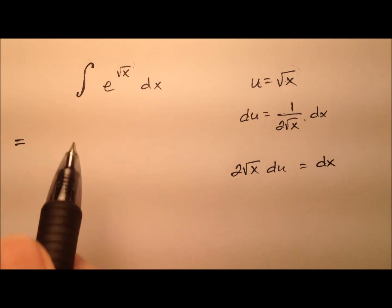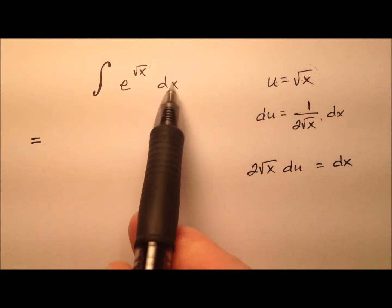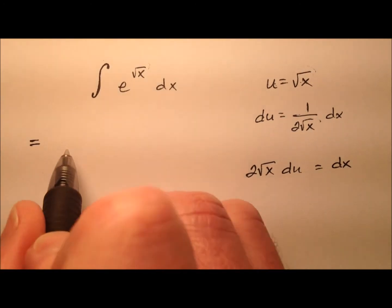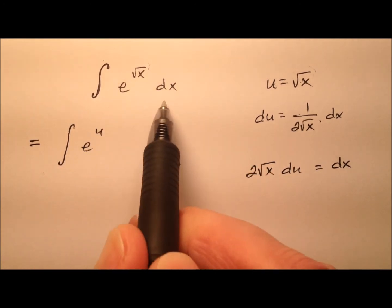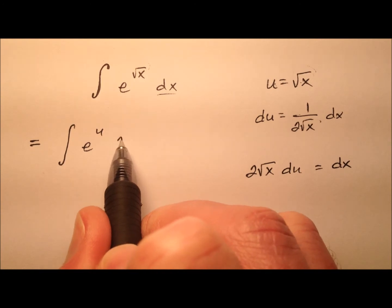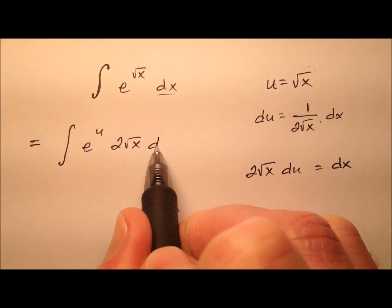Okay, so when we look to go ahead and change all of these x's into u's, it looks like we'll have e to the u and then this dx will end up being 2 times the square root of x du.